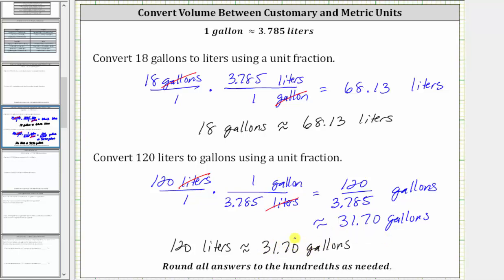It is important to leave the zero in the hundredths place value, because this indicates that we rounded to this place value. Without the zero, we may think we rounded to the tenths place value instead of the hundredths place value. I hope you found this helpful.